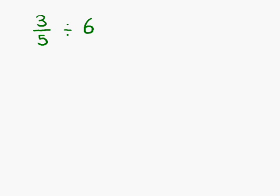In this lesson, we're going to look at dividing fractions. This is the first example of six examples. We have three-fifths divided by six. The first thing we want to do is change this one into a fraction, and we do that by putting it over one. So what we have is three-fifths divided by six over one.